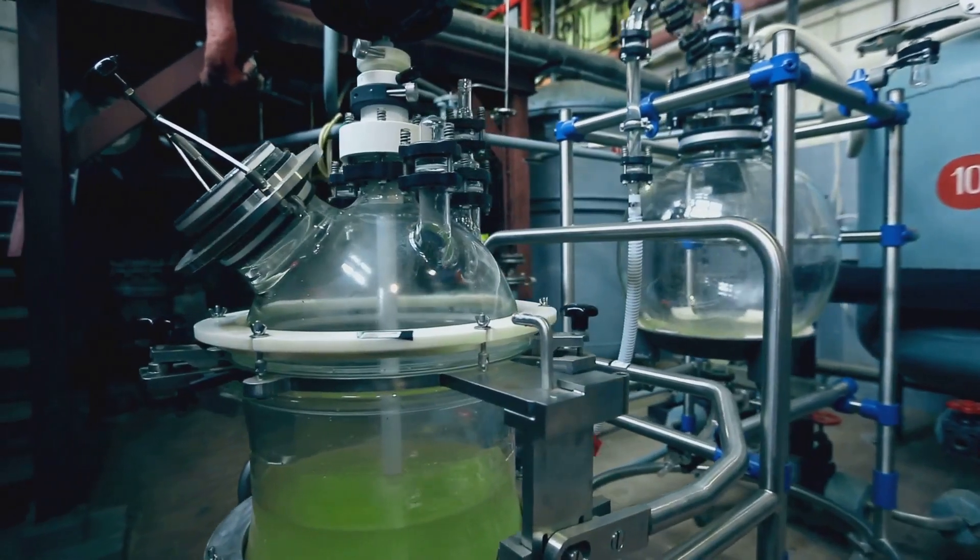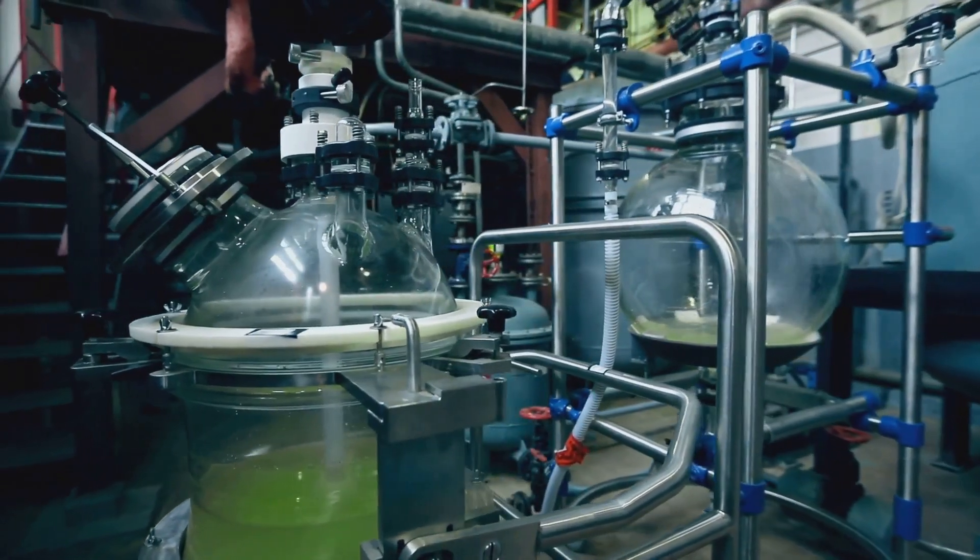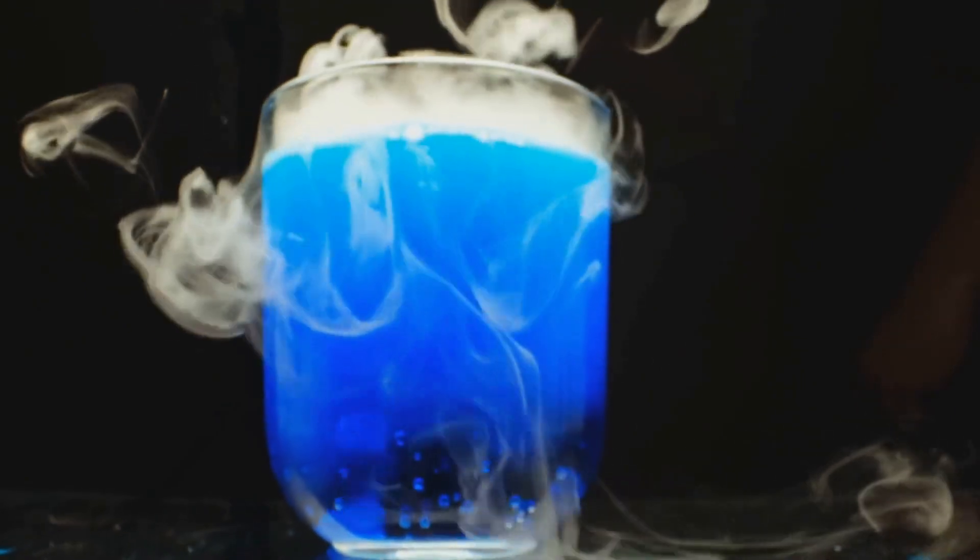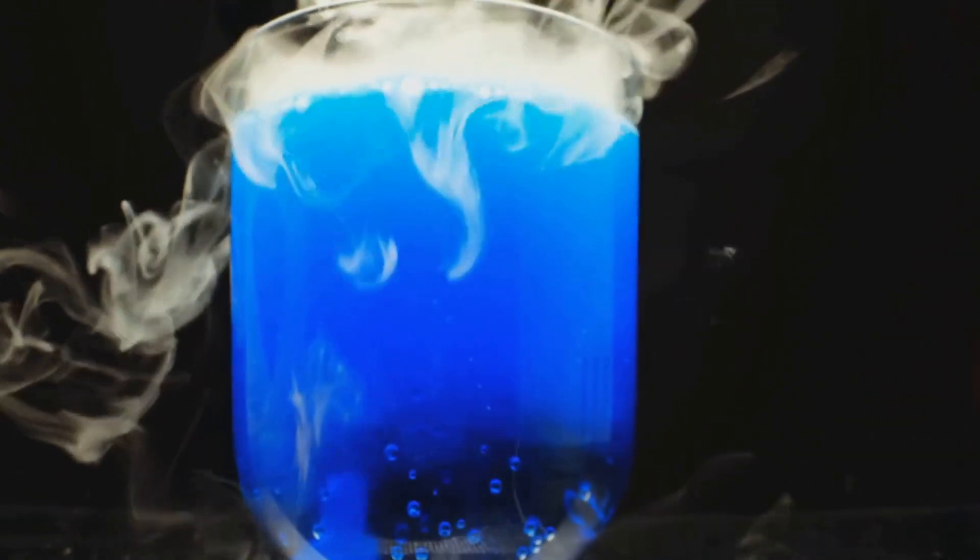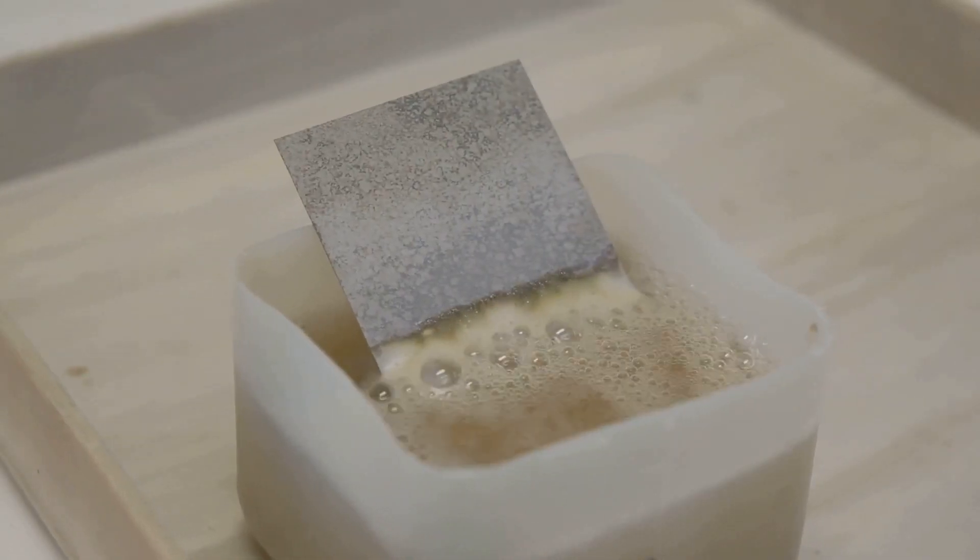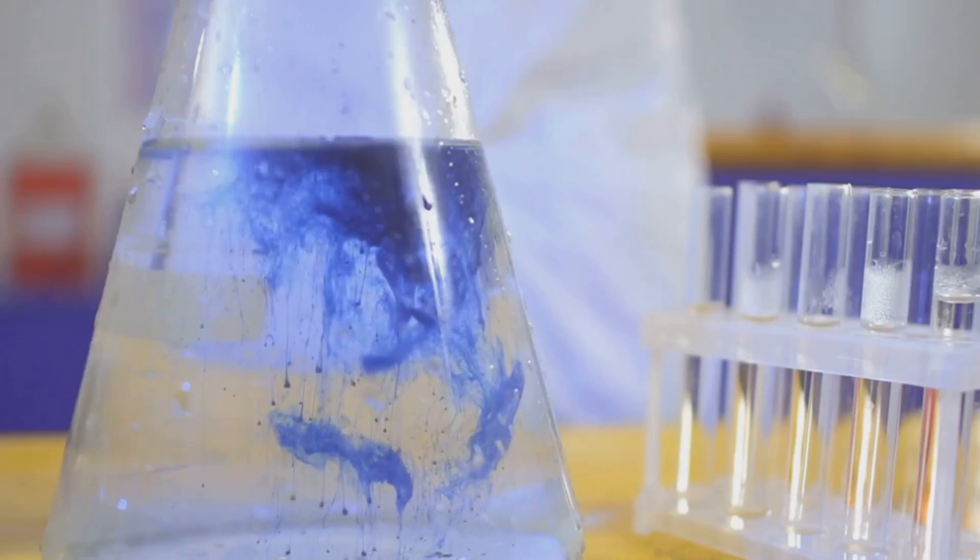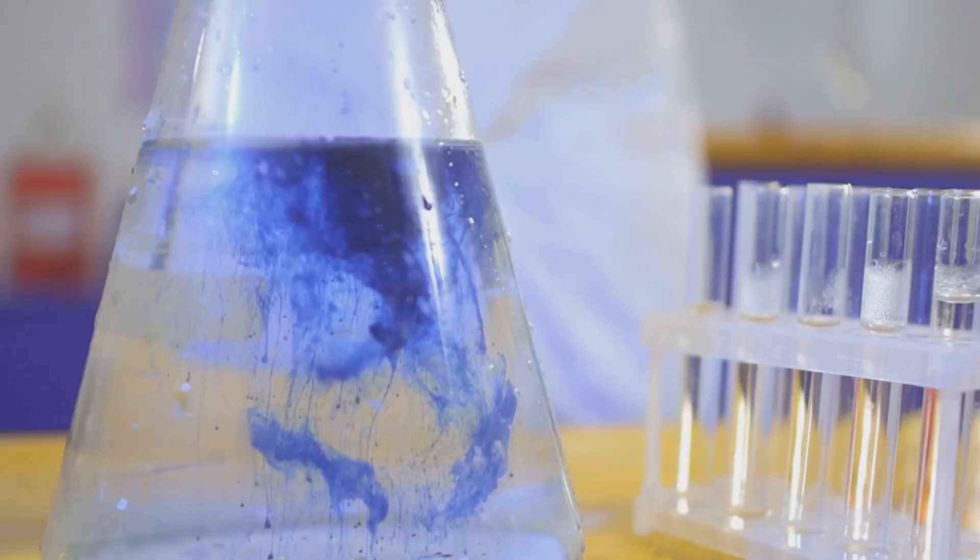The main technique used to separate these elements is called solvent extraction. First, the used nuclear fuel rods are dissolved in strong acid, turning the solid metal into a liquid solution. This liquid now contains all the different elements jumbled together.